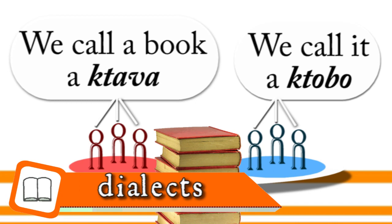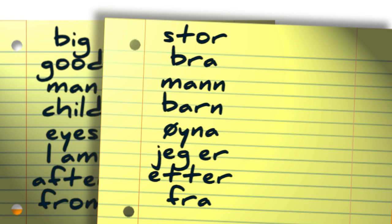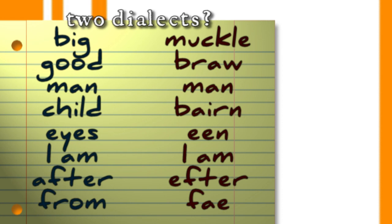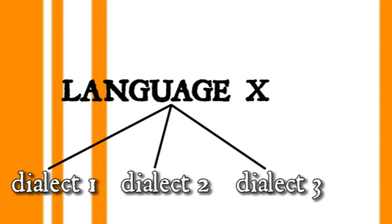Moving on, let's translate those words into Norwegian — the Norwegian language. And here's how we would write those same words in Swedish — the Swedish language. So Swedish and Norwegian are different languages, but British and Scottish are different dialects of the same language? Where's the line between a dialect and a language anyway?